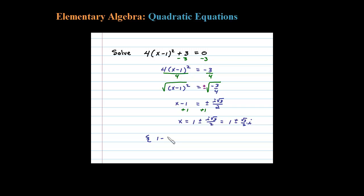1 minus square root of 3 over 2 i, 1 plus square root of 3 over 2 i. So there's my two solutions, they both happen to be complex.